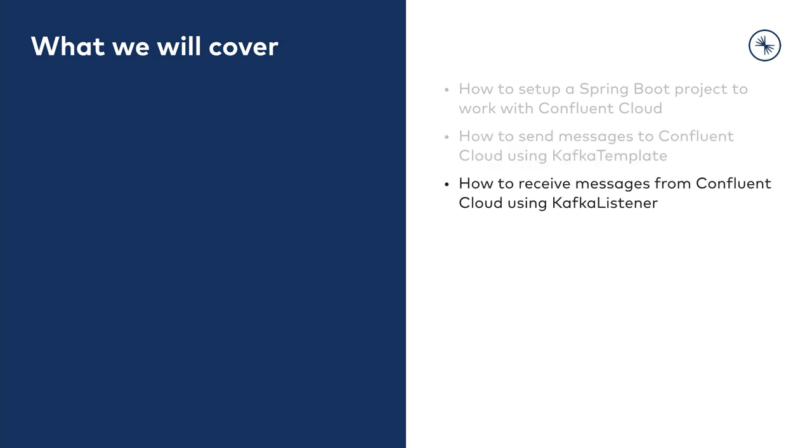In the next module, I will show you how you can use the API called Kafka Listener. Essentially, it's an annotation and approach to message-driven beans that Spring embraces, and how you can use this in your Kafka applications. After the small theoretical part, I will walk you through the process of how you can write the code that will receive those messages from Confluent Cloud.